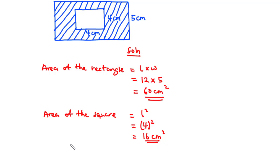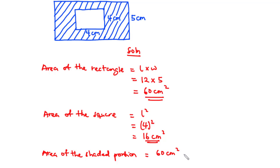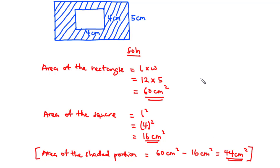The area of the shaded portion equals the area of the rectangle minus the area of the square: 60 minus 16 equals 44 centimeters squared. So the area of the shaded portion is 44 centimeters squared. That's it for today's video — thanks for watching and see you in the next video, bye bye.